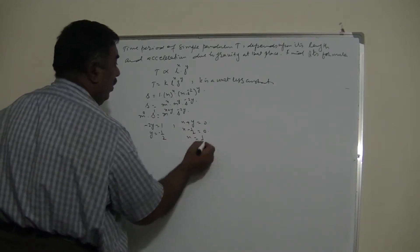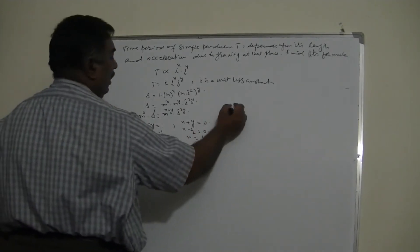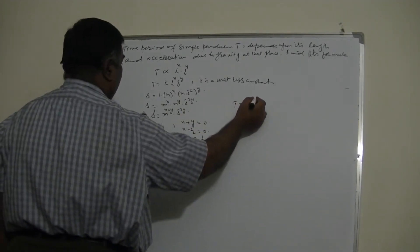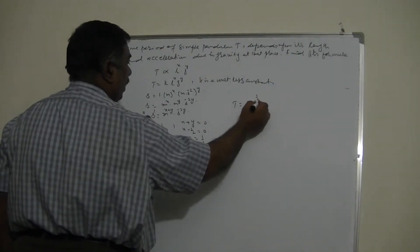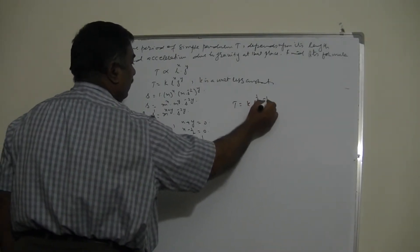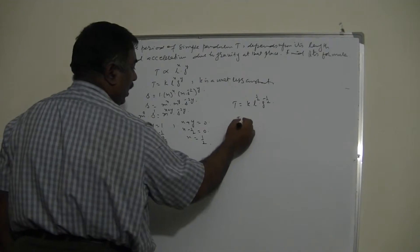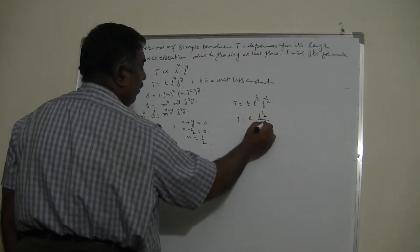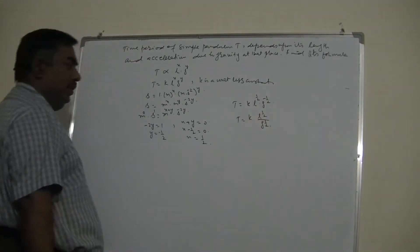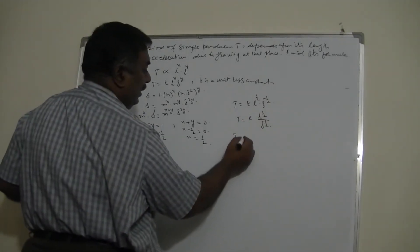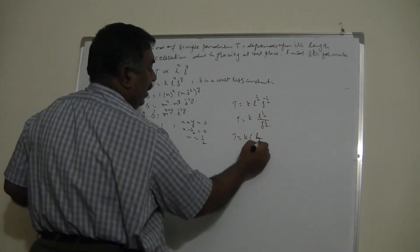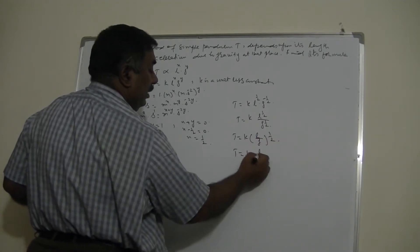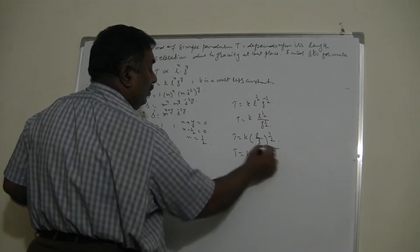With x = 1/2 and y = -1/2, I write: T = k · l^(1/2) · g^(-1/2). Bringing g^(-1/2) to the denominator: T = k · l^(1/2) / g^(1/2), which equals T = k · √(l/g).